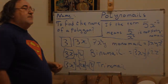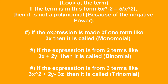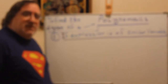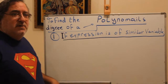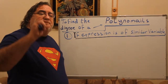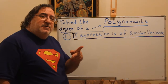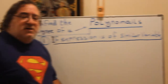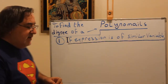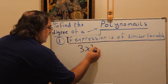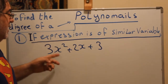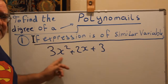Now let's go to the degree of the polynomial. We know how to find the name. Now, to find the degree of the polynomial, you have to look at the exponents of that expression. We have two types of expressions. The first type is if the expression has similar variables — like 3x squared plus 2x plus 3, which is all in terms of x.